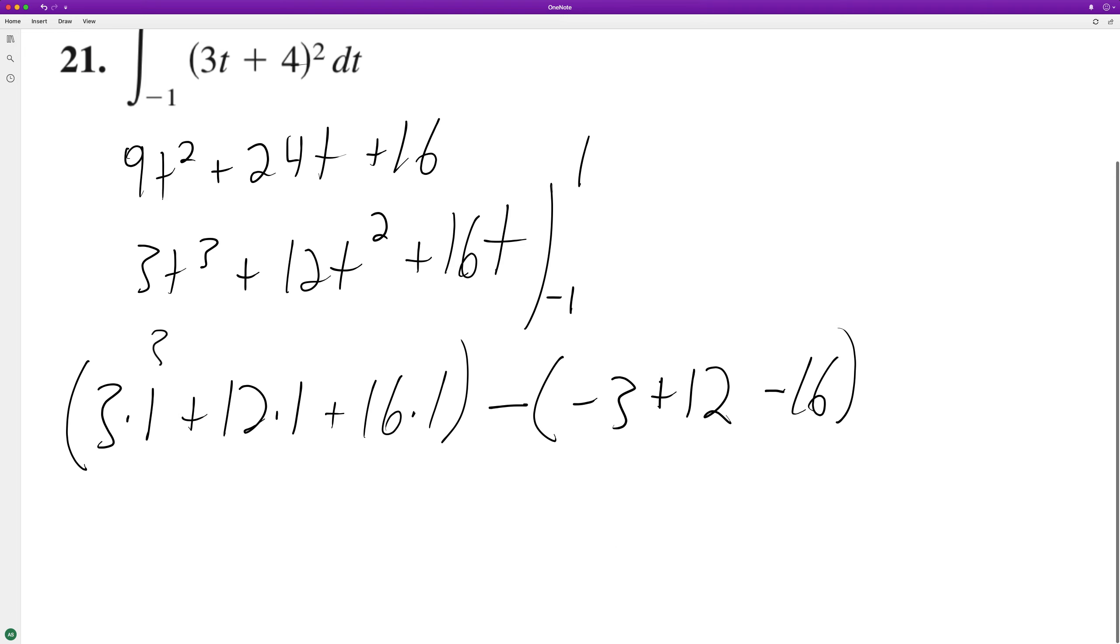So this is 3, 12, 16. We end up with 31 minus, and this becomes minus 7. So minus negative 7 becomes plus 7, and we end up with positive 38.